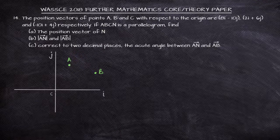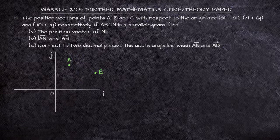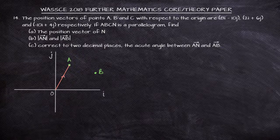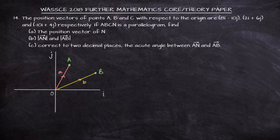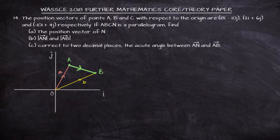For us to get to A, we can go directly from the origin to A. Let's call that vector A, small letter a. We can also go from the origin to B — let's call that vector B, small letter b. Then we can also move from point capital A to point capital B, and let's call that vector AB.